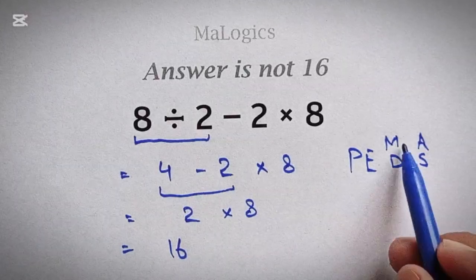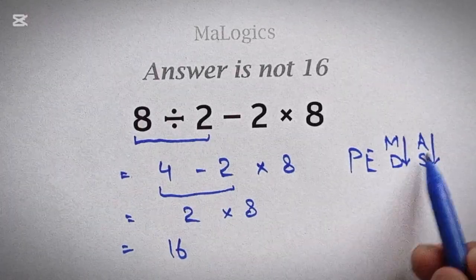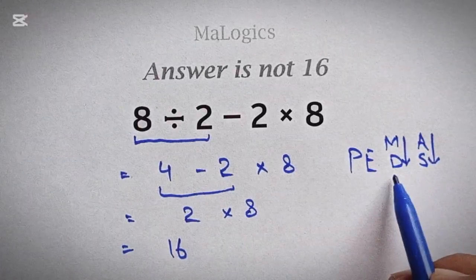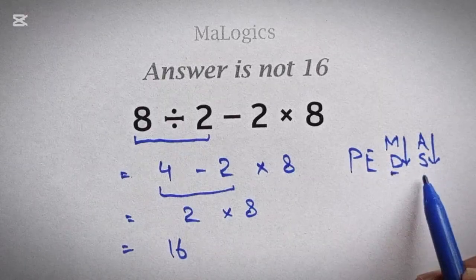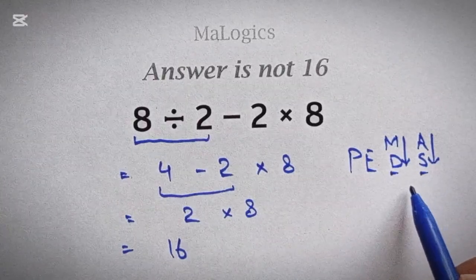According to order of operations, multiplication and division have equal priorities, and we have to work from left to right. And same goes for addition and subtraction.